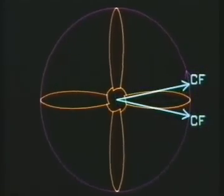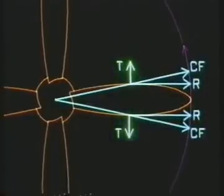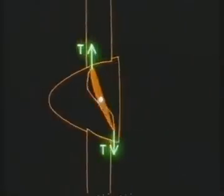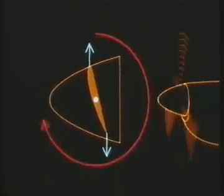Three principal stresses affect propellers, and centrifugal force causes two of them. The first is produced by the radial component, which tries to tear the blades from the hub, and the second by the tangential component, which tries to turn the blades to fine pitch. The centrifugal twisting moment.